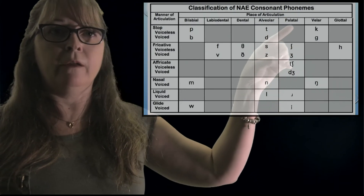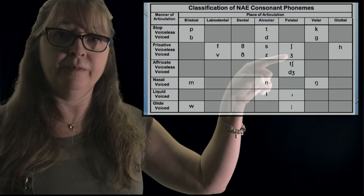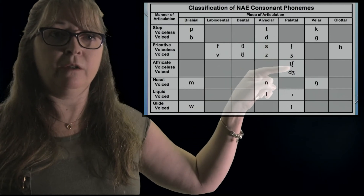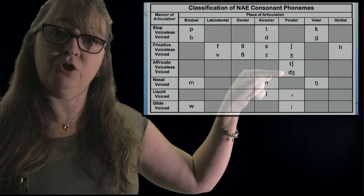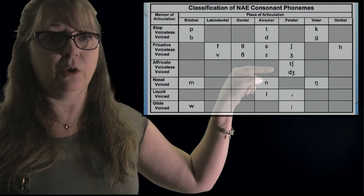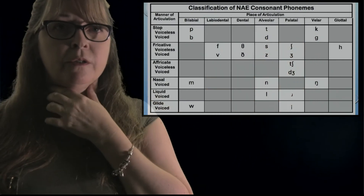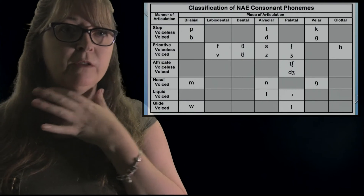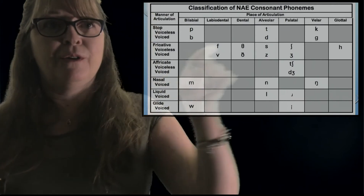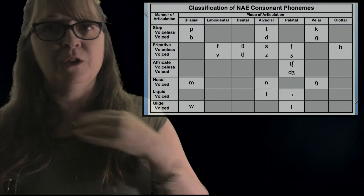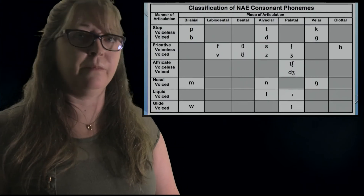Palatal: SH, J. Affricate: CH (voiceless), J (voiced). Velar: K and G — same place of articulation, but one is voiced, one is voiceless. Glottal: H — for some people it's farther back. There's also another one that is actually voiced, which is pretty cool, but I can't pronounce that one, so just don't be scared of it.